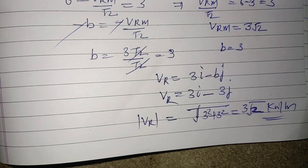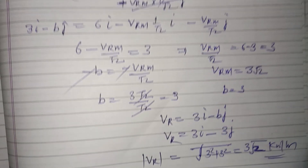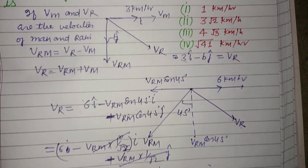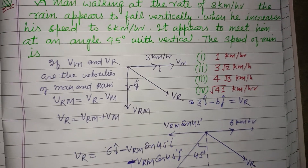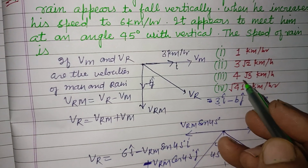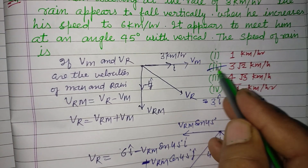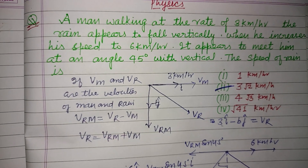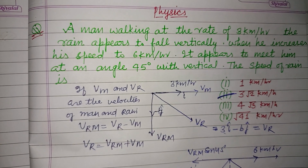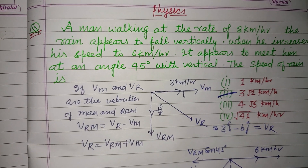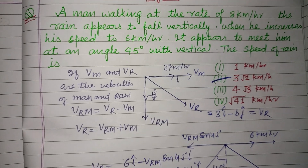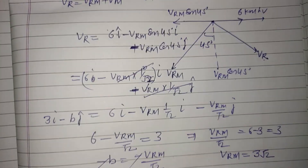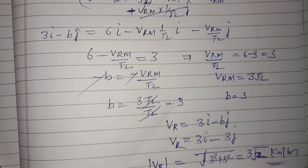This is the speed of rain, which is found in option B. So option B is correct. I hope you got it — please like the video, subscribe the channel, thanks for watching.